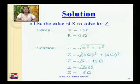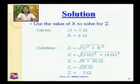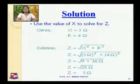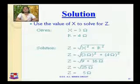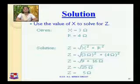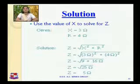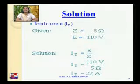The impedance is equal to under root of R squared plus X squared, which is equal to under root of three squared plus four squared. So it is under root of nine plus sixteen, under root of twenty-five. So the answer is equal to five ohm. So impedance for this particular circuit is five ohm.